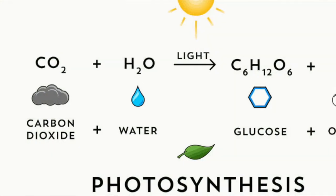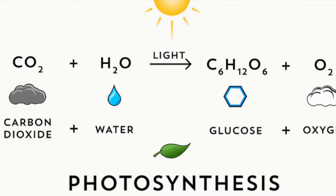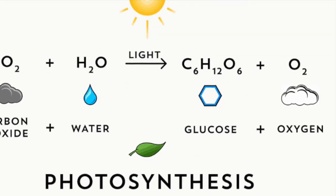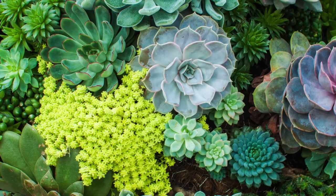Everyone has heard of photosynthesis, the process that is used by plants to convert light energy into chemical energy. But did you know that there are three types of photosynthesis?